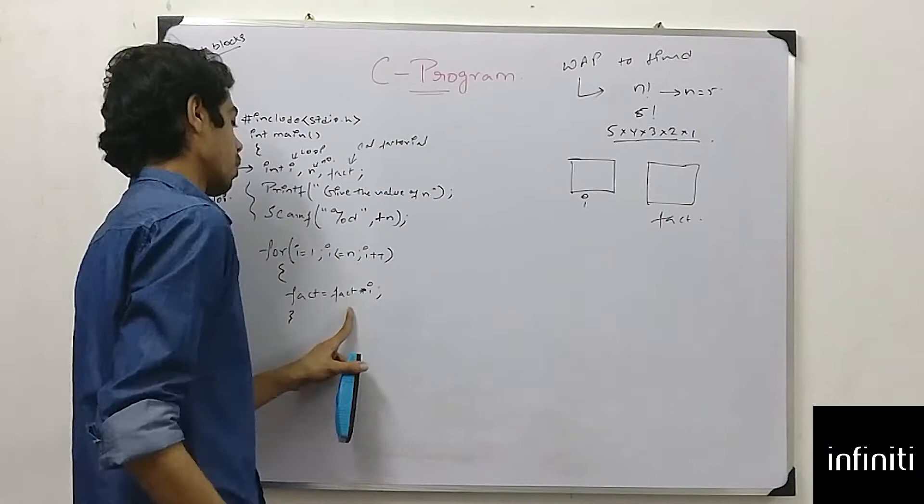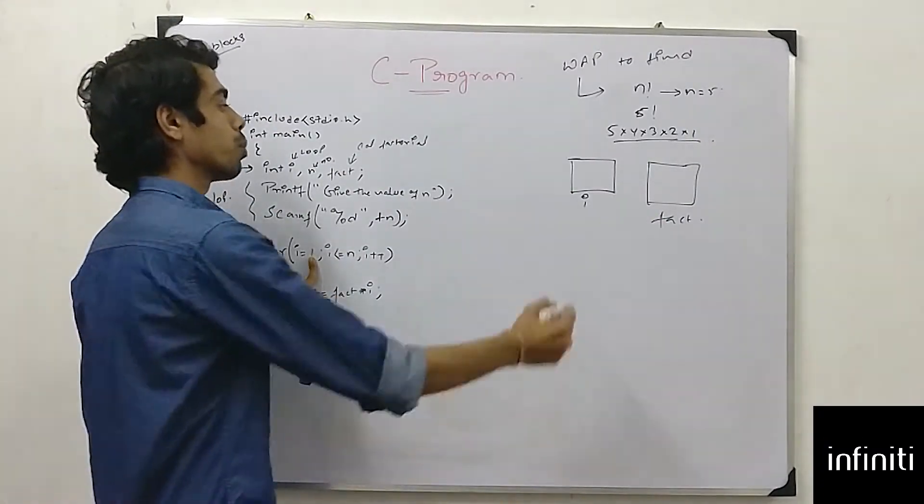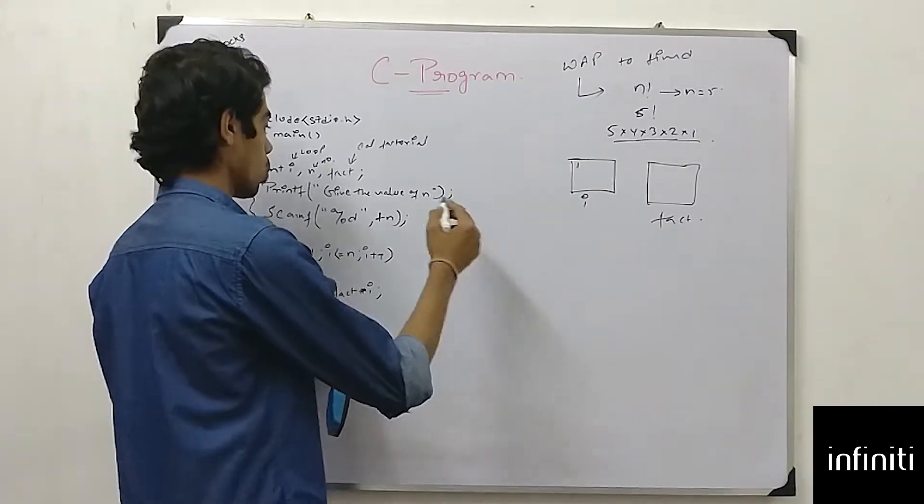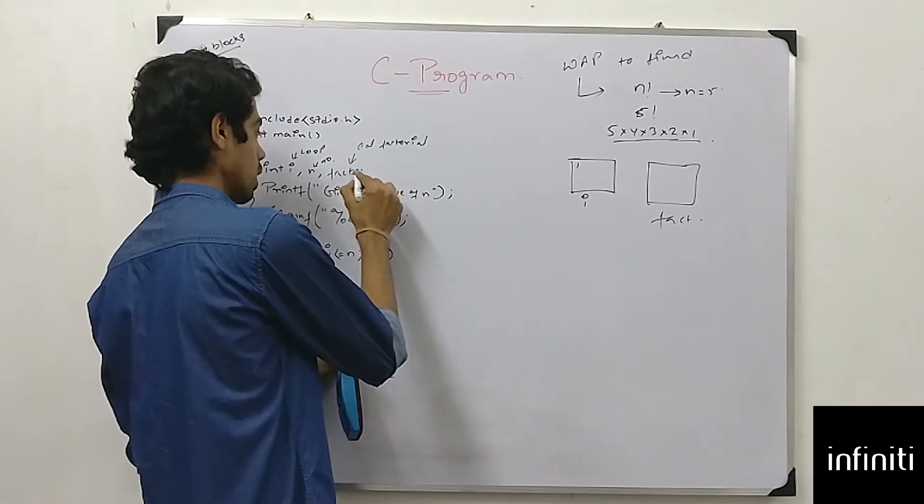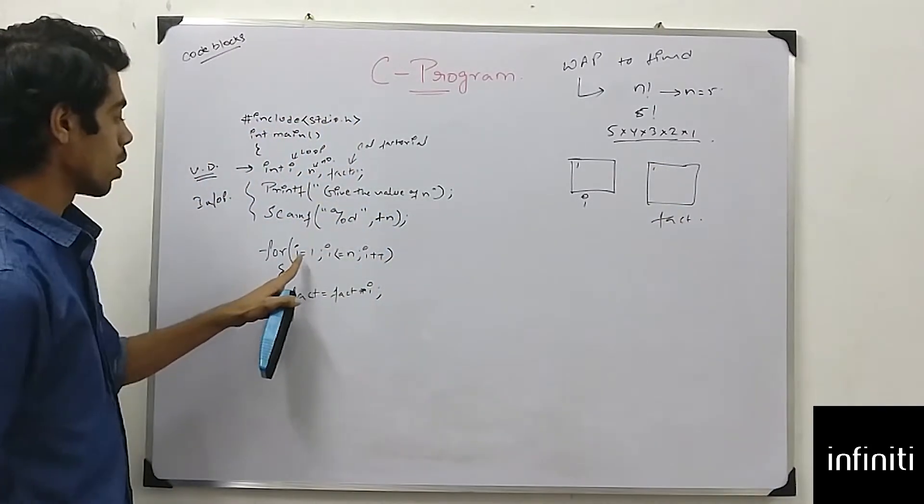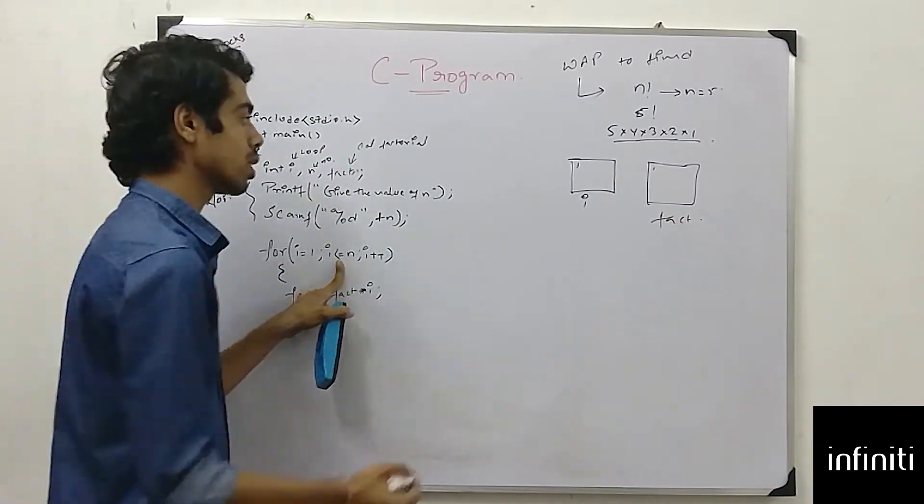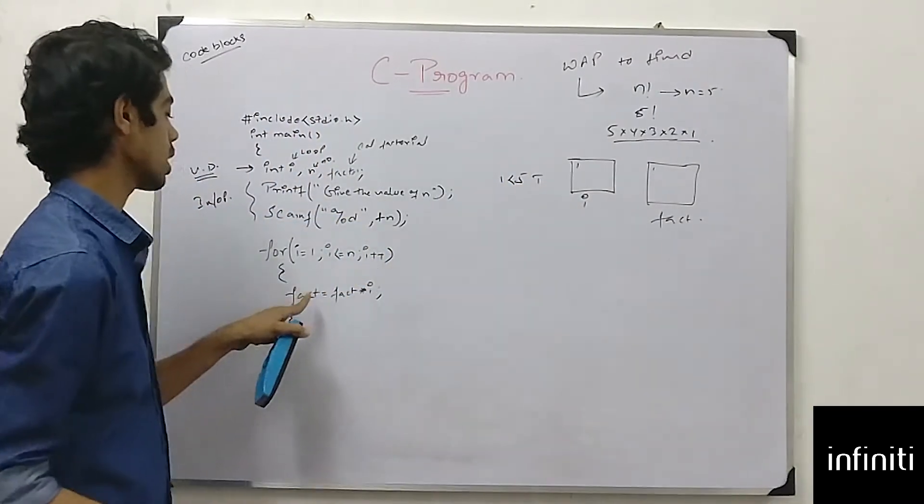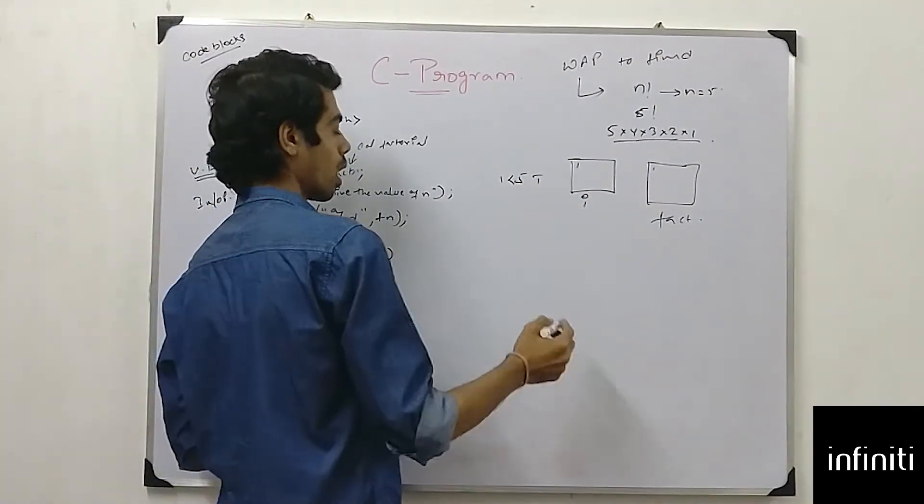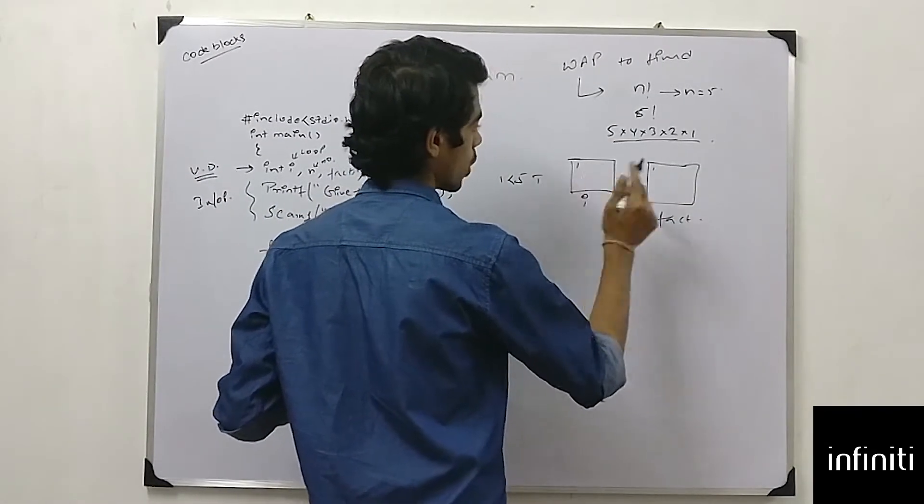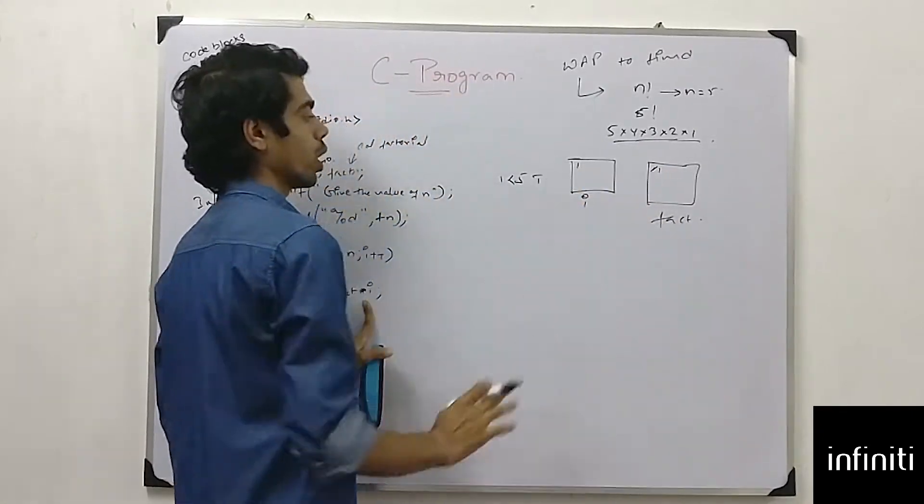Now for i is equal to 1, my i is 1 and my fact will be 1 at the time of initialization. So for i is equal to 1, i less than n. Okay, 1 less than 5, condition true. We can get inside the factorial, factorial into i. 1 into 1, which is 1. And we will store that in factorial, which is 1.